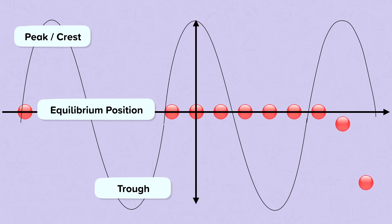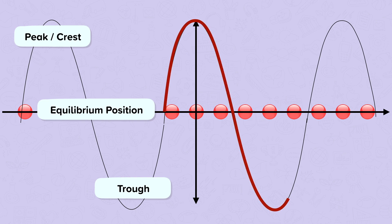The highest point of the wave is called the peak or crest, and the lowest point is the trough. One complete cycle of the wave, starting at the equilibrium position all the way up to the peak, down to the trough and back, is called a wavelength. You can measure the wavelength from peak to peak, and trough to trough as well.